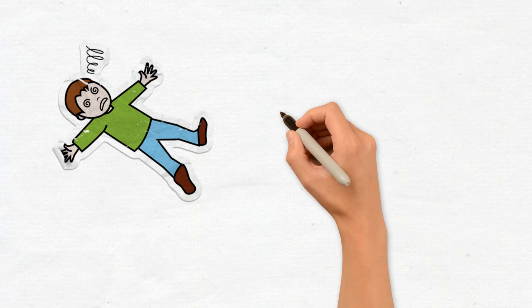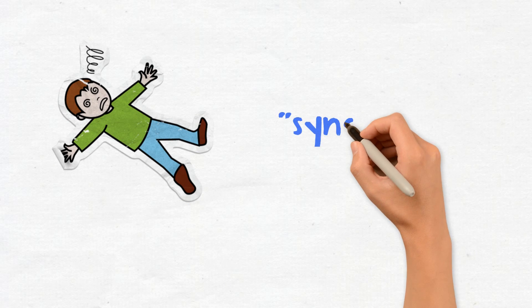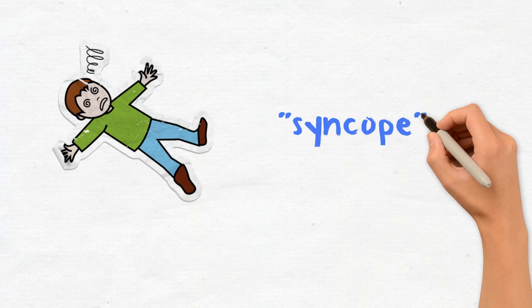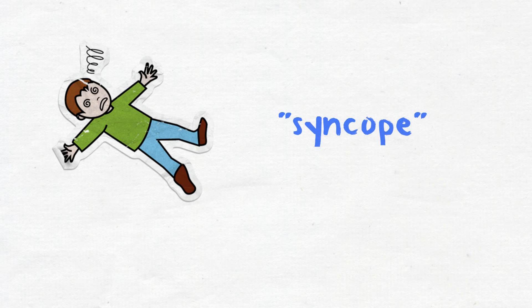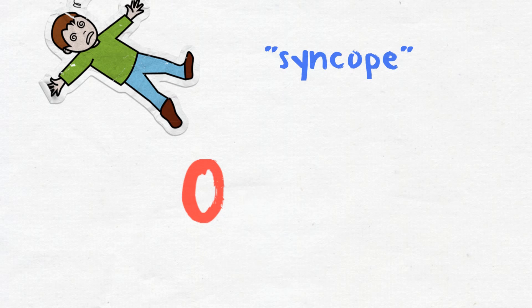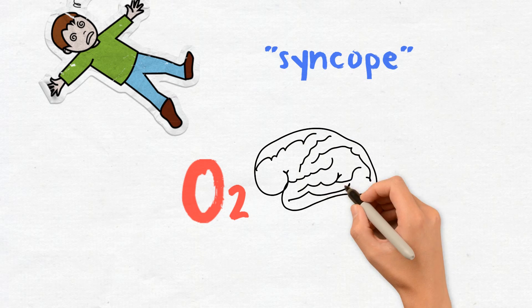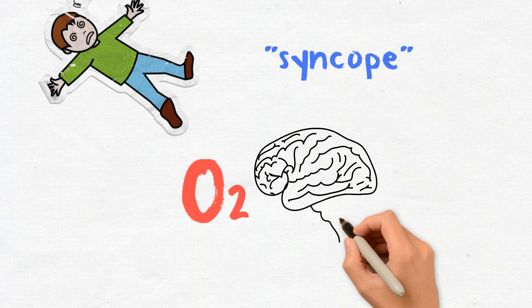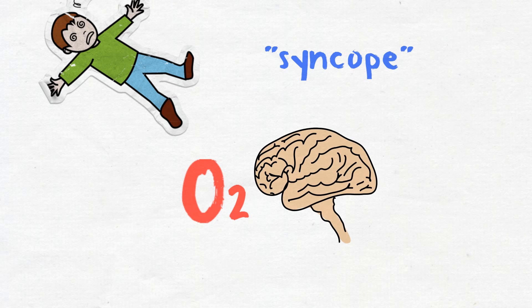The medical term for fainting is syncope. Fainting is a sudden loss of consciousness, usually temporary and typically caused by a lack of oxygen in the brain.